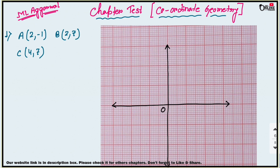The first problem: three vertices of a rectangle are A(2, -1), B(2, 7), and C(4, 7). Plot these points on a graph and hence use it to find the coordinate of the fourth vertex D. So first, you have to plot these points. Here, A is at (2, -1).